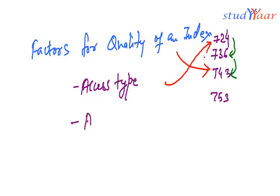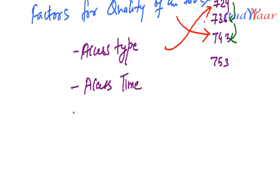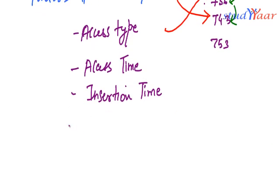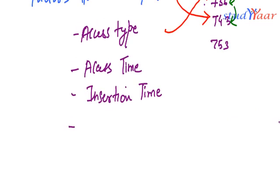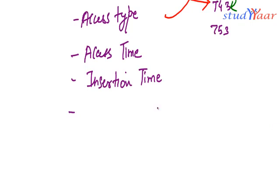Next factor is access time. How much time does it take me to find my record with the help of index. Next is insertion time. Whenever a new record is entered in the file then how much time does it take for me to insert the details about this record in the index. How much extra time does entry in the index cost. That is about insertion time.